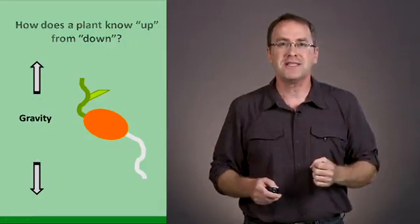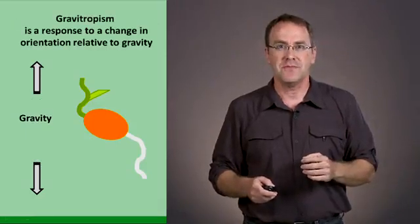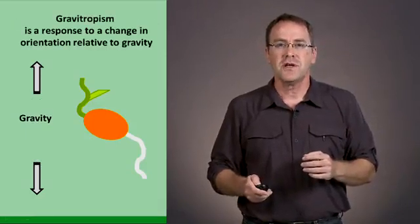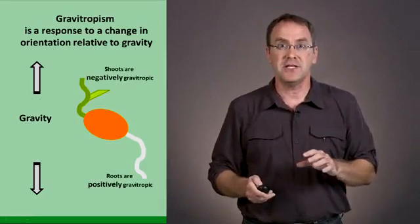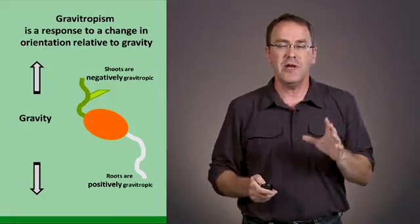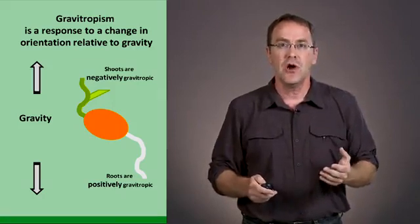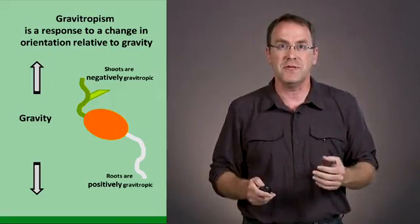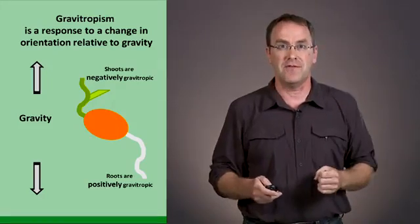We call this response to gravity gravitropism, where roots respond positively to gravitropism, meaning that they grow down towards the gravity vector, whereas the green parts of the plant, the shoots, respond negatively to gravitropism, growing away from the gravity vector.